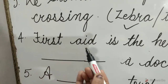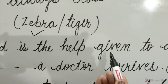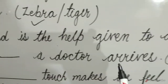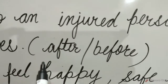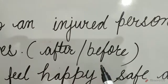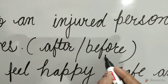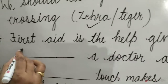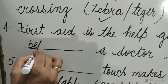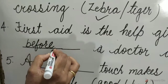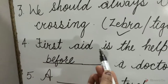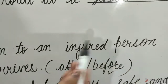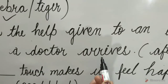Question 4: First aid is the help given to an injured person blank a doctor arrives. The options are after and before. The before option is correct. So tick on before and write here: before. First aid is the help given to an injured person before a doctor arrives.